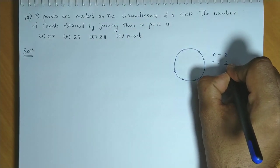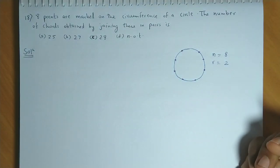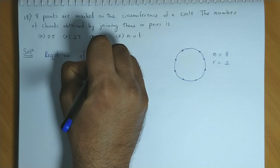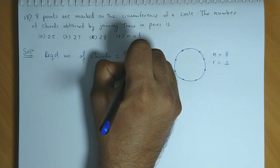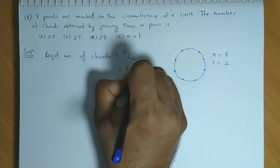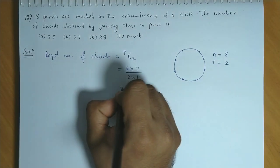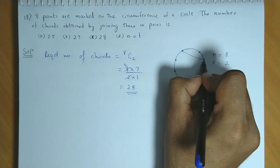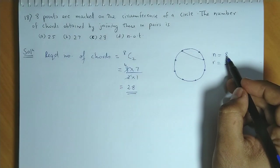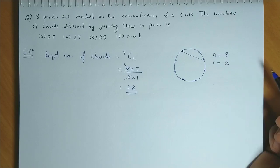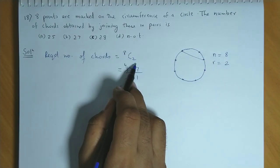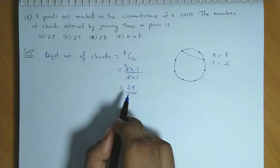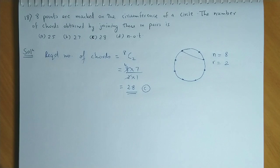The number of non-collinear points is 8, and we need to select 2 at a time. The number of possible selections equals the number of chords drawn. So the required number of chords is 8C2. Simplifying: 8×7 / (2×1) = 28. For each chord, we select 2 points from 8, giving 8C2 selections, and each selection produces one chord. So the required number of chords is 8C2 = 28, and the answer is option C.